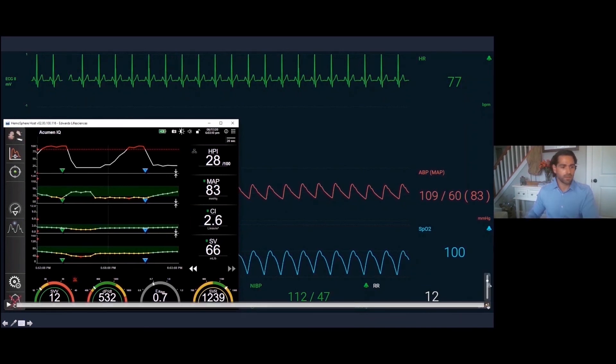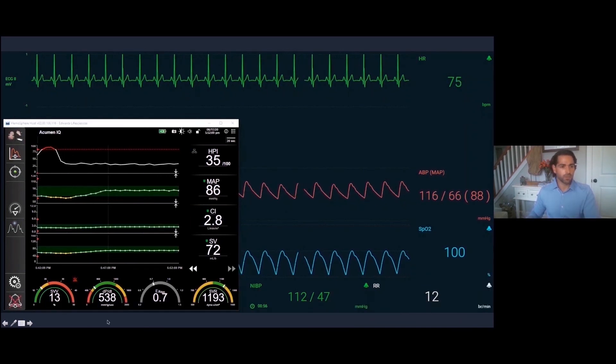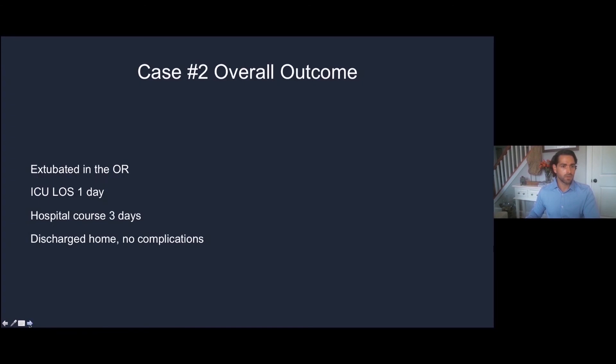Let's talk about how this patient overall did, the overall outcomes. This patient did well. Extubated in the operating room, ICU length of stay of one day, three-day hospital course, discharged home with no complications. This is our goal from robotic cardiac surgery.